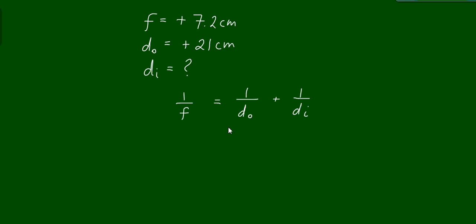In trying to determine the value for d_i, we begin by isolating d_i. We subtract 1 over d_o from both sides to maintain the equality. That leaves us with the equation for 1 over d_i. I'll rearrange the equation so the unknown is on the left hand side: 1 over d_i equals 1 over f minus 1 over d_o.